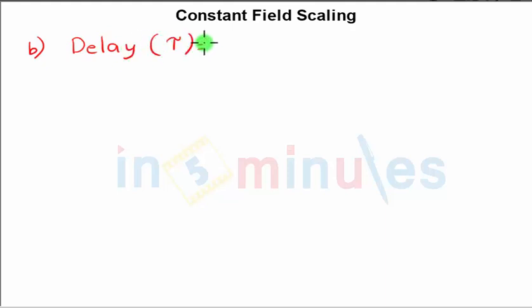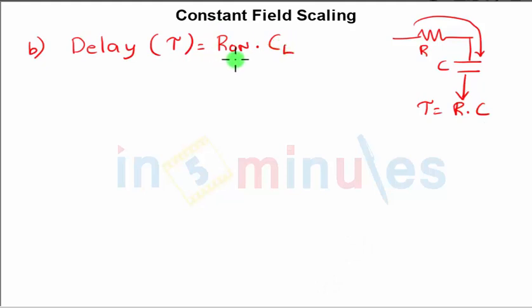Delay τ is, for an RC circuit, τ = R·C. The delay for a transistor is Ron times the load capacitance, where Ron is the ON resistance we just derived and CL is the load capacitance.